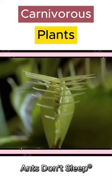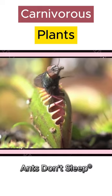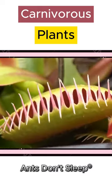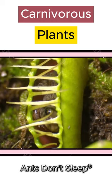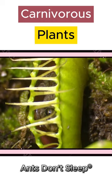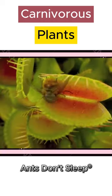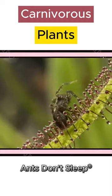Their main food is insects. When insects enter the teeth of this carnivorous plant, it will immediately eat its prey, from which the plant will secrete decomposers and turn them into nutrients for the plant.